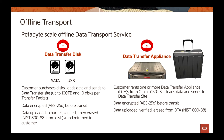The data transfer appliance has a capacity of 150 terabytes. So if you go beyond 100 terabytes and don't want to send multiple hard drives, you can just request the appliance — it's easy to request through the OCI console. We send the appliance to you, you load your data into it (it gets encrypted), and then you send it back to us. Both options are available and very easy to use.